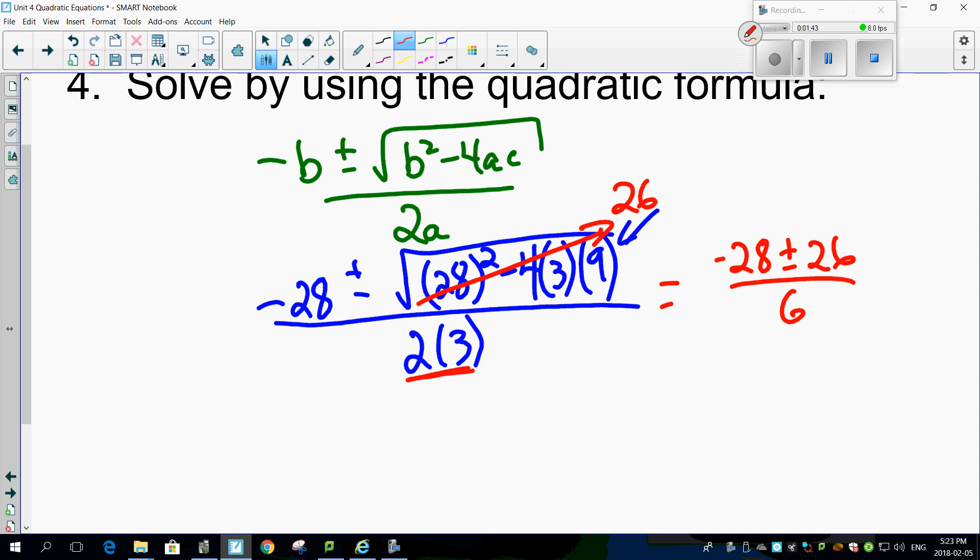Okay, two solutions. Minus 28 plus 26 works out to be minus 2 over 6. Minus 28 minus 26 ends up being, think about it, minus 54 over 6.